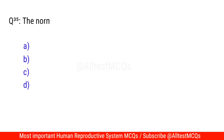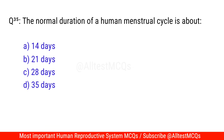Question No. 35: The normal duration of a human menstrual cycle is about? The right option is C. 28 days.